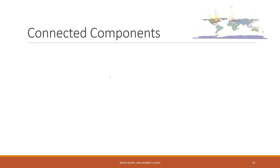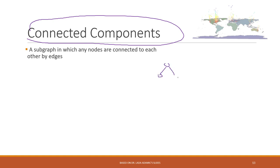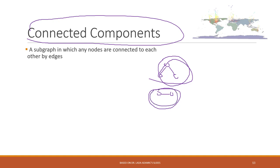Another very important measure in network analysis is called connected components. A connected component is a subgraph in which any nodes are connected to each other by edges. For example, in a graph like our example, we have one subgraph and another subgraph. Each is considered one connected component. Within a connected component they are connected with each other, and outside of those connected components they have no connections.